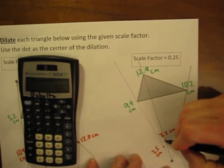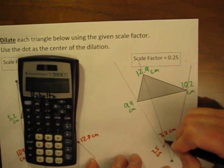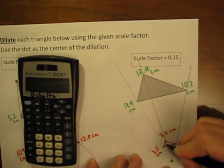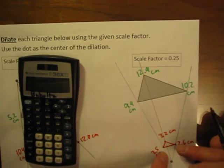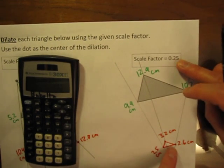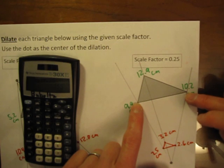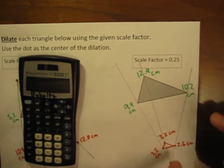And finally, we can just connect these with lines, and we have a triangle that has been dilated by this scale factor. It is one quarter the length. All the lengths are one quarter the length of the original.